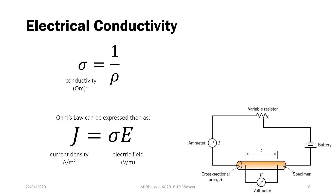This is actually the correct or the original formulation proposed by Ohm as the true Ohm's law. V is equal to IR is just a consequence of J is equal to sigma E.